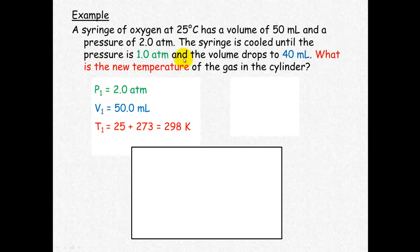Let's look at the changed circumstance. The syringe is then cooled. So the new pressure is 1 atmosphere, the new volume is 40 ml, and we're trying to calculate the new temperature, which of course will be in Kelvin. So we use our formula, P1V1 over T1 equals P2V2 over T2.